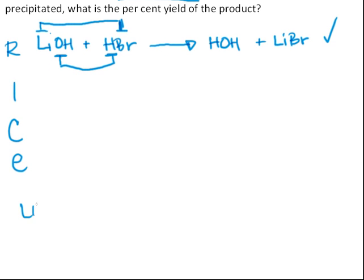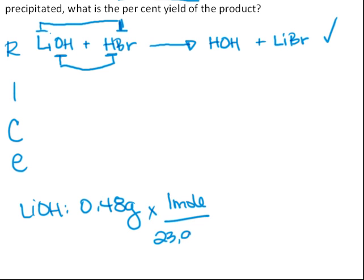So for lithium hydroxide, we were told that we were given 0.48 grams. And we can convert this to moles by dividing by the molecular weight, which is 23.94834 grams.